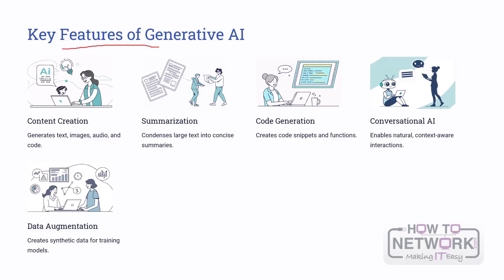One key feature is content creation, where AI can generate text, images, audio, and even code. Another important capability is summarization, where AI can condense large amounts of text into concise, high-level summaries. Generative AI can also write programming code, creating code snippets and functions to assist developers. Conversational AI enables natural, context-aware interactions, allowing for more human-like dialogue. And finally, generative AI can create synthetic data, which is useful for training and expanding machine learning models.